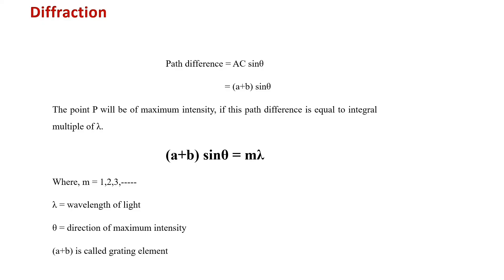The grating element a+b can be calculated from the fact that on a diffraction grating we know how many lines are there in 1 centimeter area. The formula for a+b is: 1 centimeter divided by the number of lines.